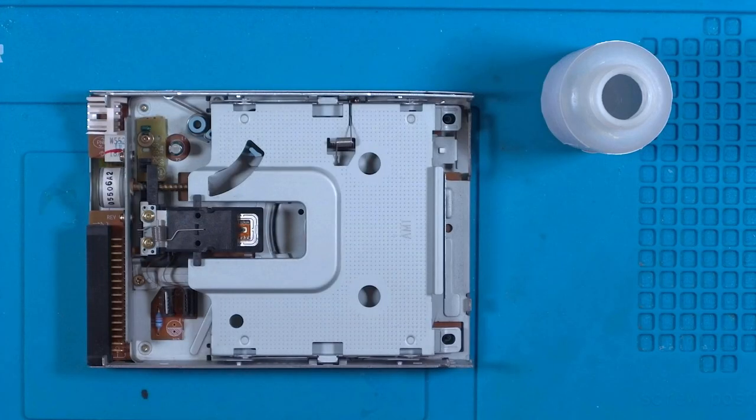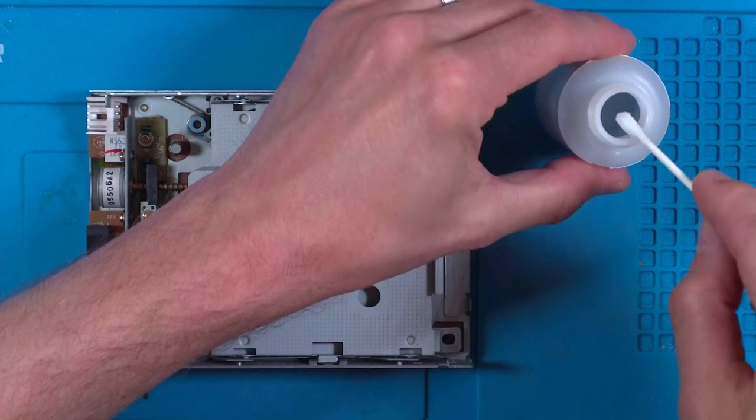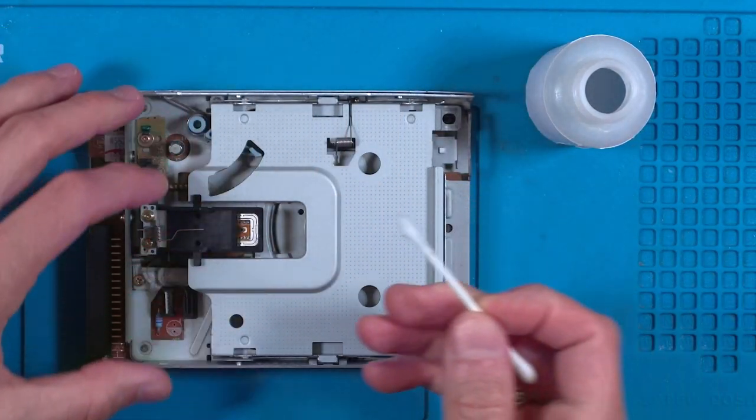Okay, so that's the internals of the drive. Let's have a look at cleaning the heads. Now the first thing you might want to do is blow out some of the dust that's built up inside the drive, and then get one of these cotton buds, you know the kind that you're not supposed to clean your ears with. You'll also want some isopropanol alcohol too.